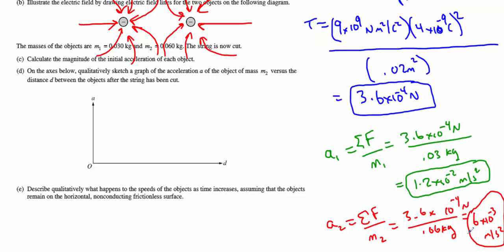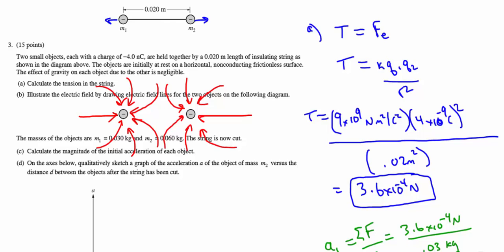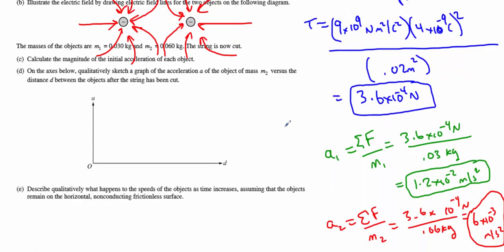Now we want to sketch qualitatively the acceleration of object mass 2 versus distance after the string has been cut. So basically, they're getting further and further apart. What's happening to their acceleration? You've got to recognize the acceleration is indeed changing. It's decreasing as you get further and further away. The original force decreases because of this R squared value. It not only decreases, but it decreases at a square rate. So we're looking for a downward curve that's approaching zero.